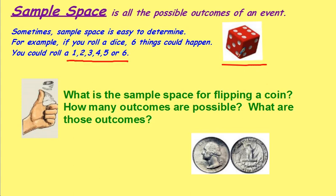What is the sample space for flipping a coin? How many outcomes are possible? What are those outcomes? There are only two possible outcomes. When you flip a coin, you can either have heads or tails. There are two outcomes.